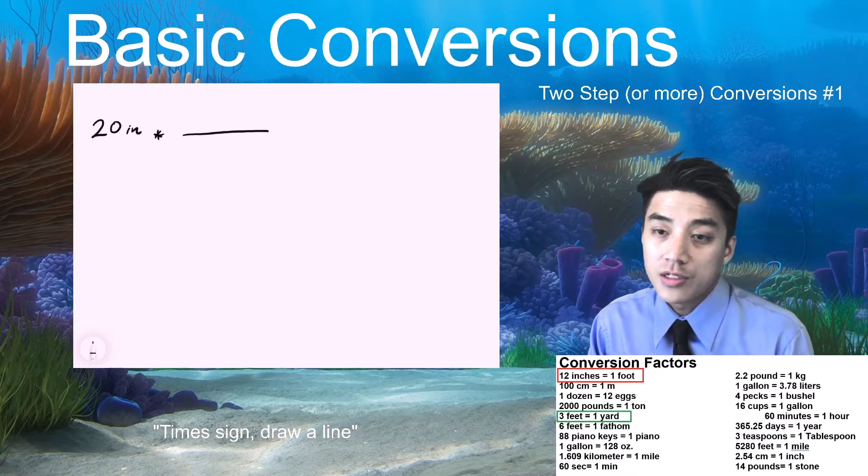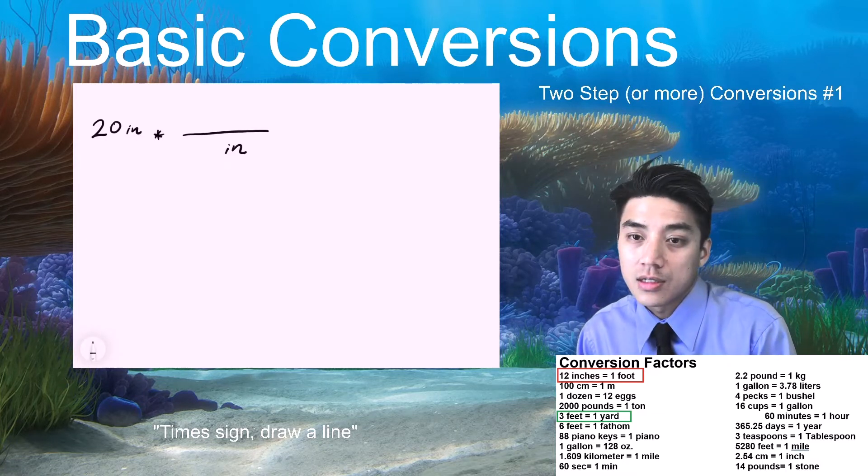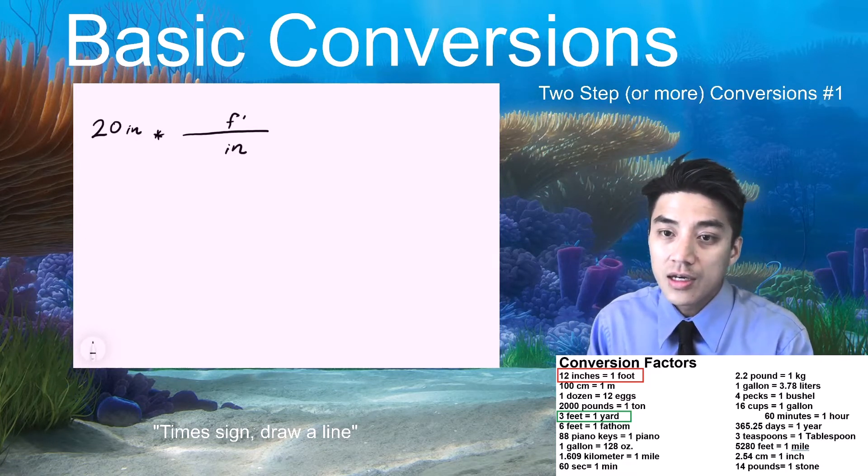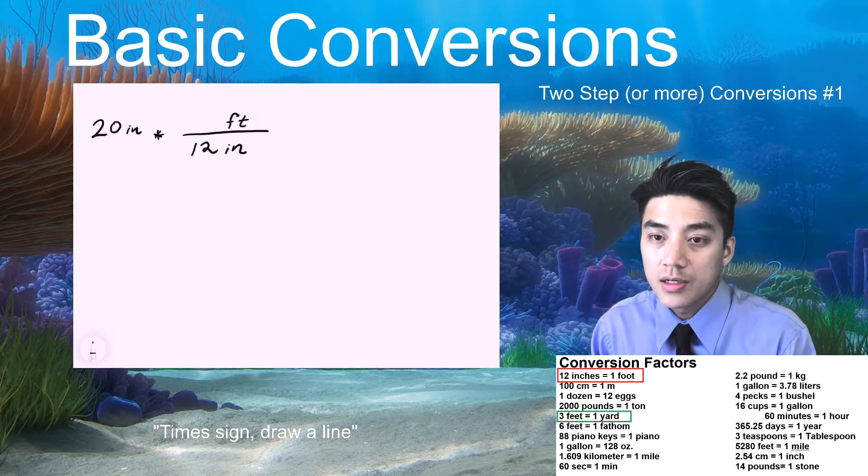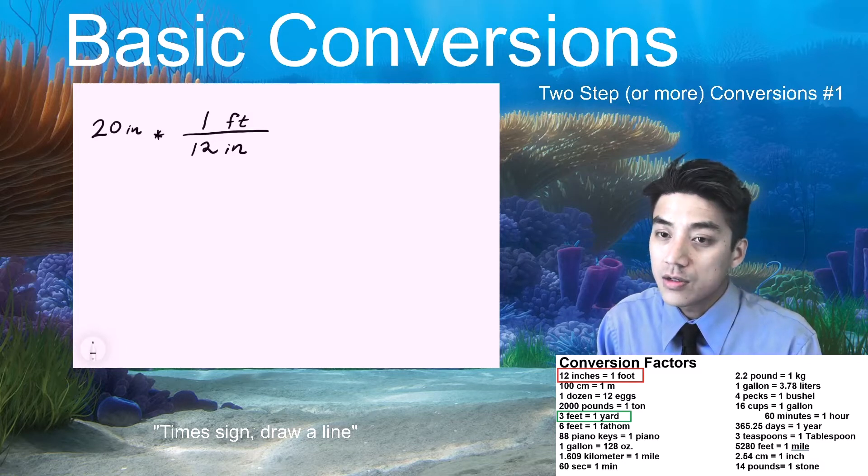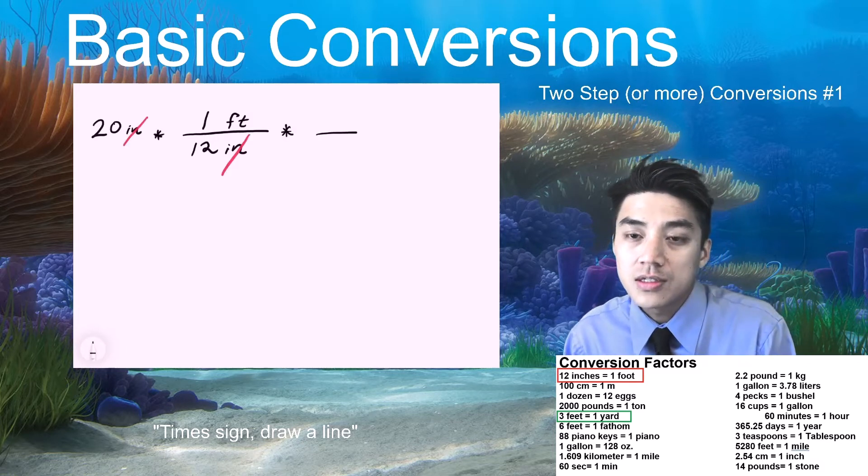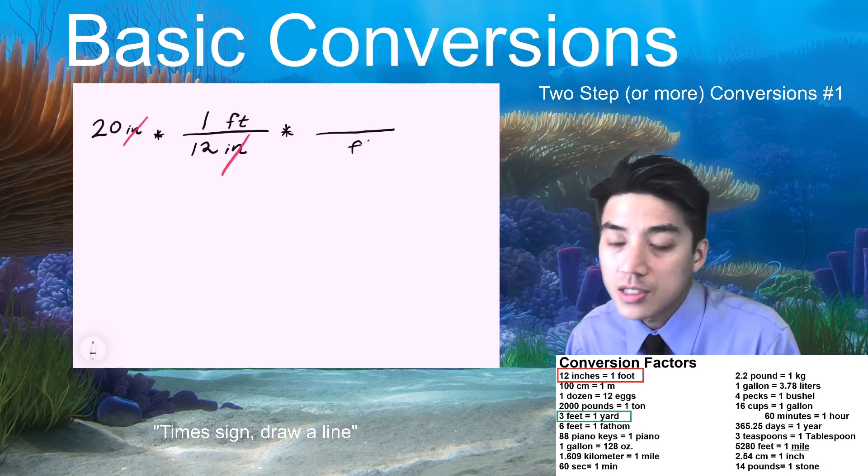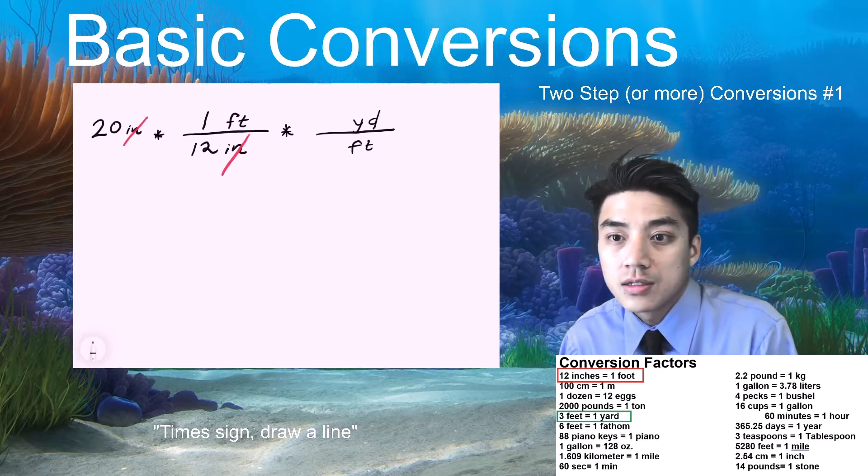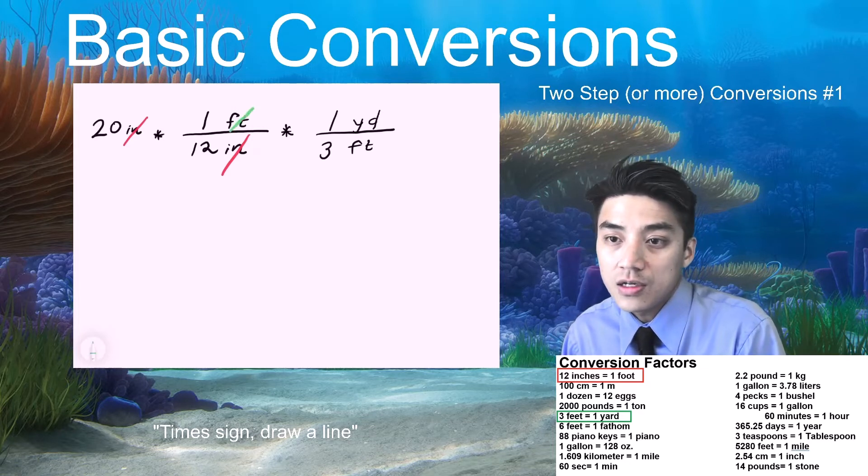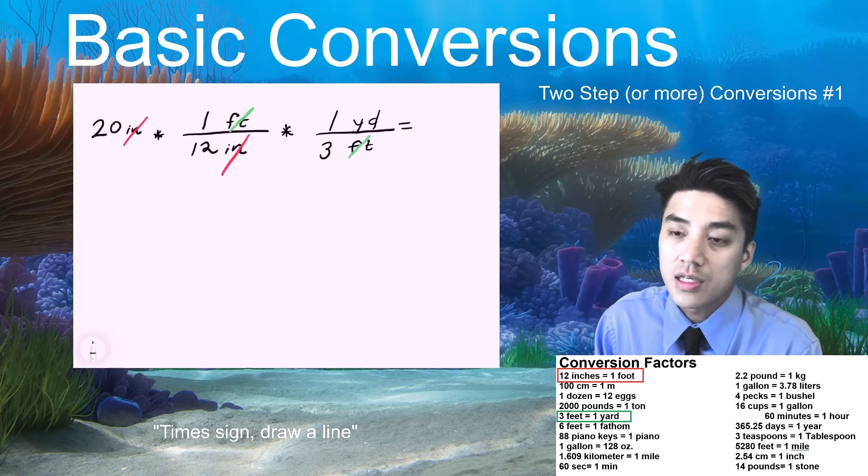You're being asked to go from inches to yards. Okay, so like before, time sign, draw a line. Inches on top, inches on bottom. Foot will go on top. And then the conversion factor here is easy. 1 foot for every 12 inches. And then make sure the inches cross-cancel. And then resume your work. So now foot goes on the bottom. 3 feet, 1 yard. They cross-cancel.